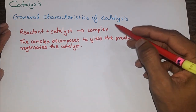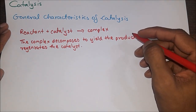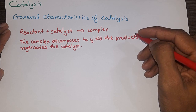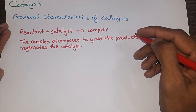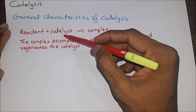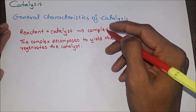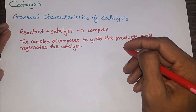General characteristics of catalysis: From the definition of catalyst, it seems that a catalyst is not consumed and does not participate in the chemical reaction. However, in reality the catalyst takes part in the chemical reaction — it combines with one or more of the reactant molecules to form an intermediate complex of reactant and catalyst. That is: reactant + catalyst → complex. The complex then decomposes to yield the products and regenerates the catalyst: complex → products + catalyst.